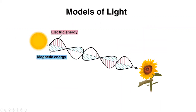And sometimes light behaves like a wave. So when the electrons move around inside the surface of the sun, or any light source, such as a light bulb or a flashlight, it generates — the moving electrons generate a wave up and down like this called the electric wave.